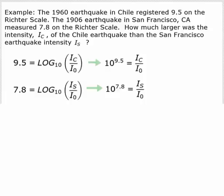I can plug those two Richter scale values into the Richter scale formula. 9.5 equals base 10 log of the Chile earthquake intensity divided by I sub not.